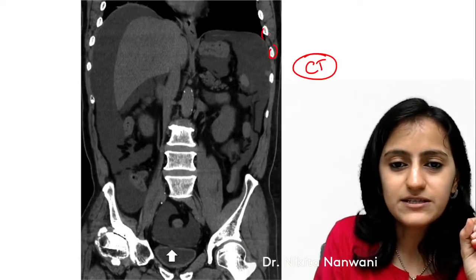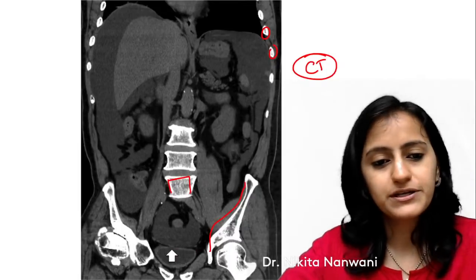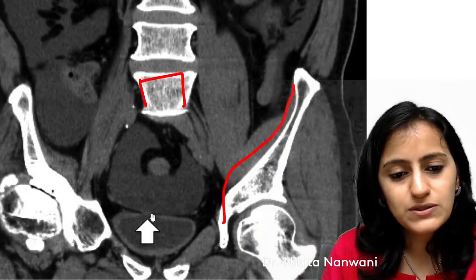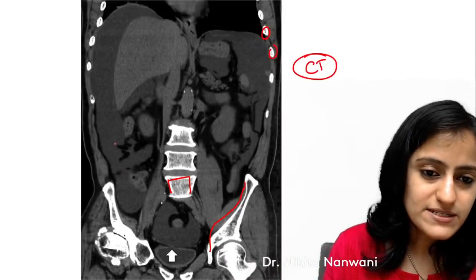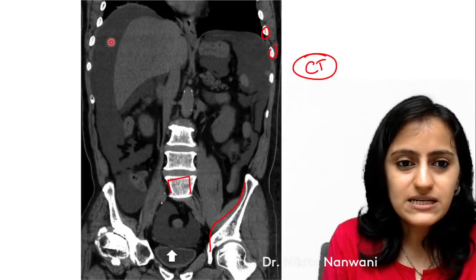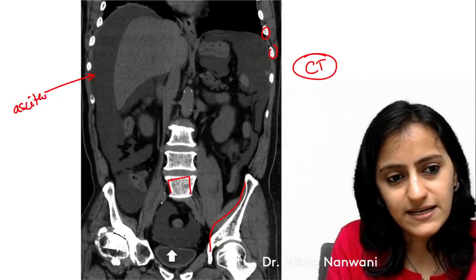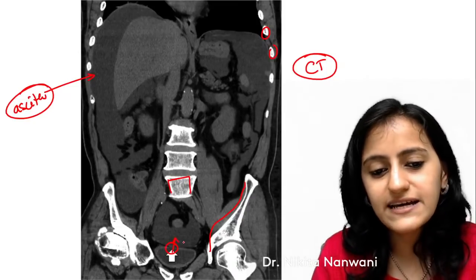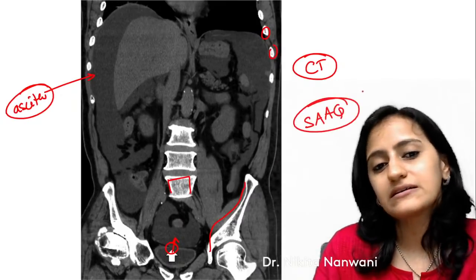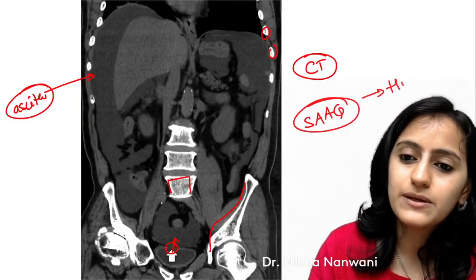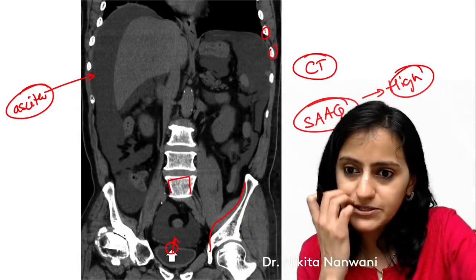Here is a final CT scan image — coronal CT. You can see the white iliac bones and vertebrae. The arrow shows a discontinuity in the bladder wall. All the gray fluid you see throughout the scan — that is ascites. The arrow tells you the cause: urinary bladder rupture. So the SAAG in this case will be high.